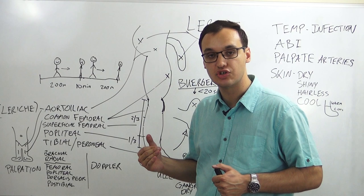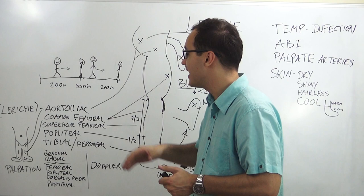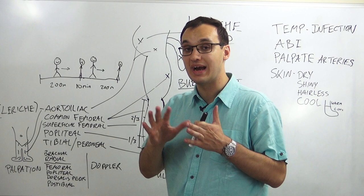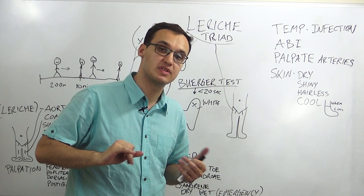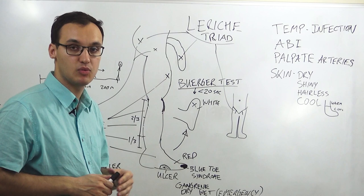Claudication means limping pain — he has pain while walking and no pain while resting. Intermittent means the pain comes and goes: he has pain, then stops, then has no pain and can walk further 200 meters, then has pain again. That's intermittent claudication.